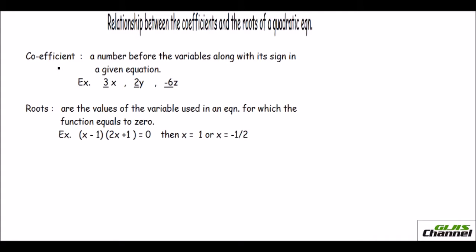The coefficient is a number which we see before the variables. In an equation you may have something like 3x squared minus 5x. The numbers before the variable are called coefficients, and you state them along with their sign. So the coefficient of x is negative 5 and the coefficient of x squared is 3. If there is a negative sign, you take that along with the number.